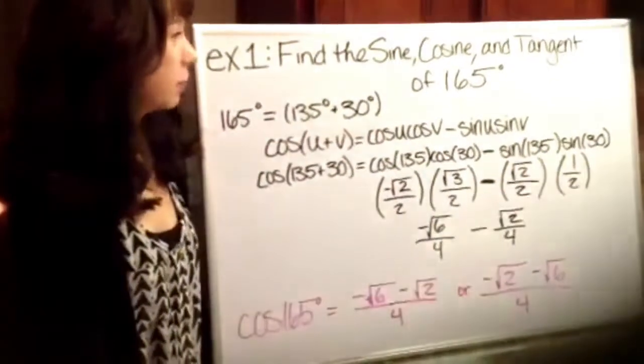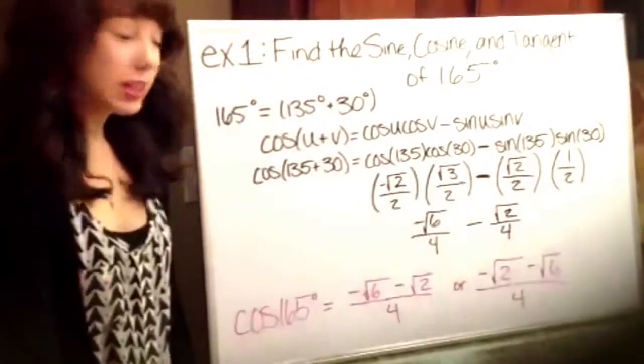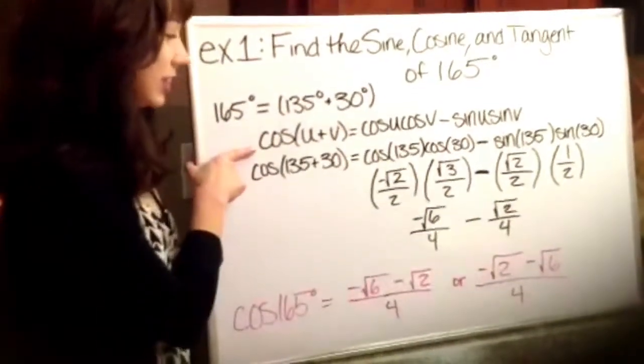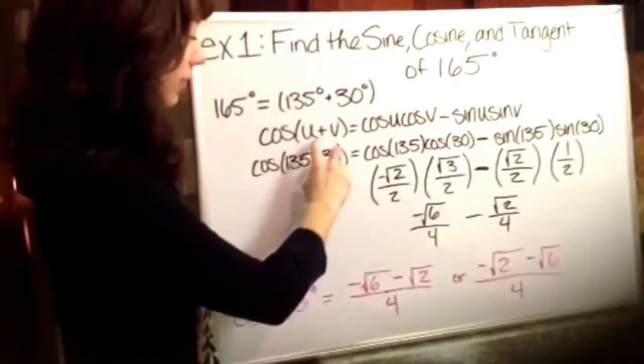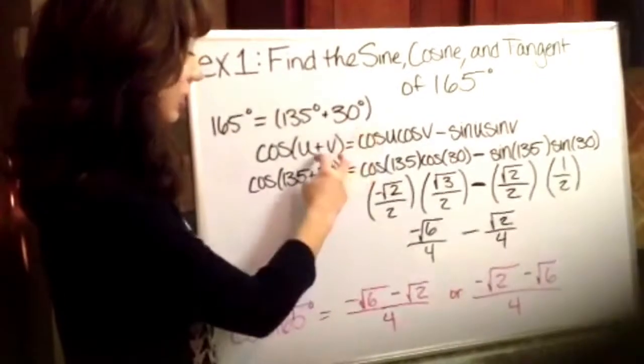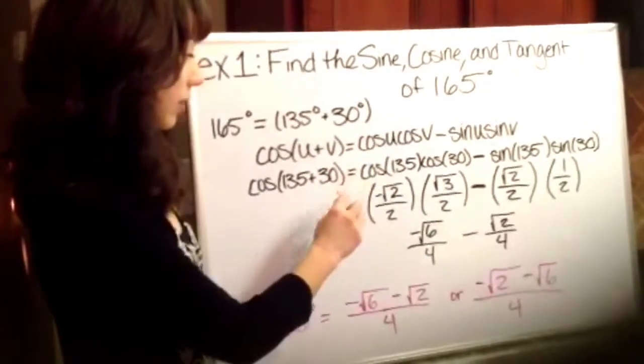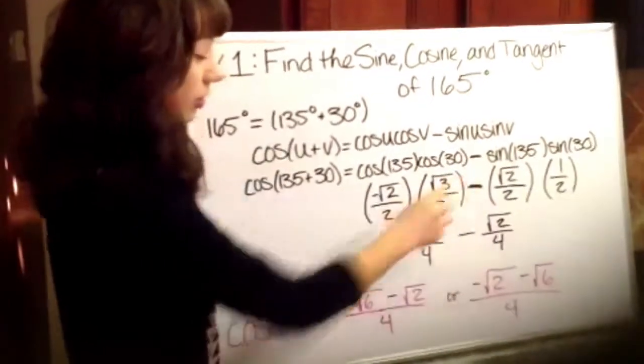To continue our example one, we found the sine, now we have to find the cosine. It's basically the same thing but you're going to use your cosine formula instead. I'm still using the same two numbers that I added before. I'm going to plug in those two degrees that I have, the 135 and the 30 into the u and the v. And then you find the cosine which is x and your sines which are the y's.